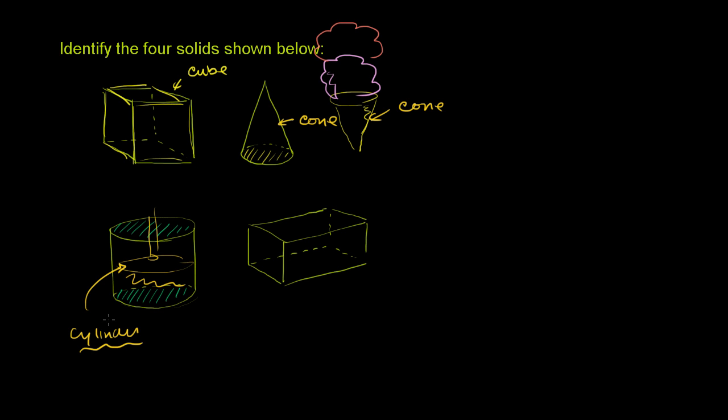And then finally, we have this thing over here. We have a bunch of edges that are all at right angles to each other. And every face here isn't necessarily a square. It looks more like every face here is a rectangle.